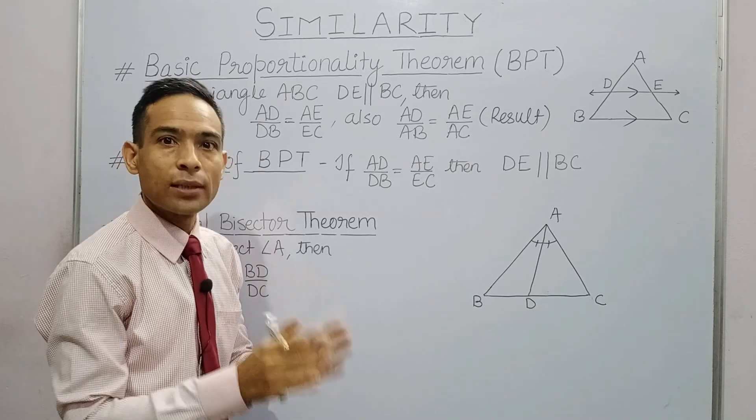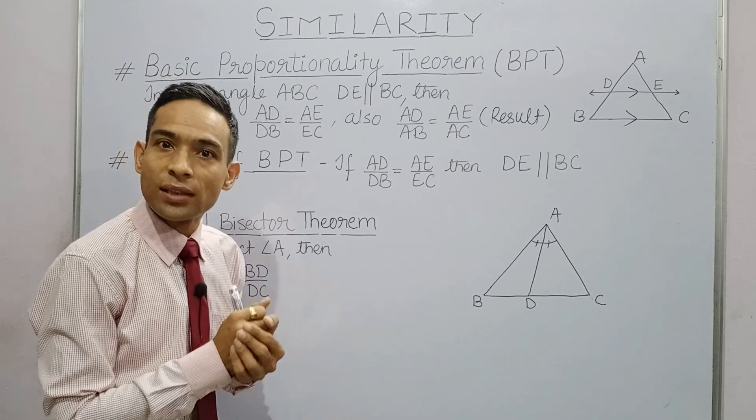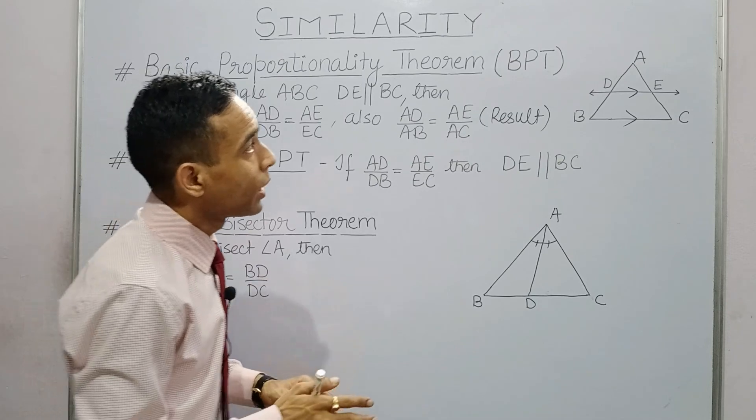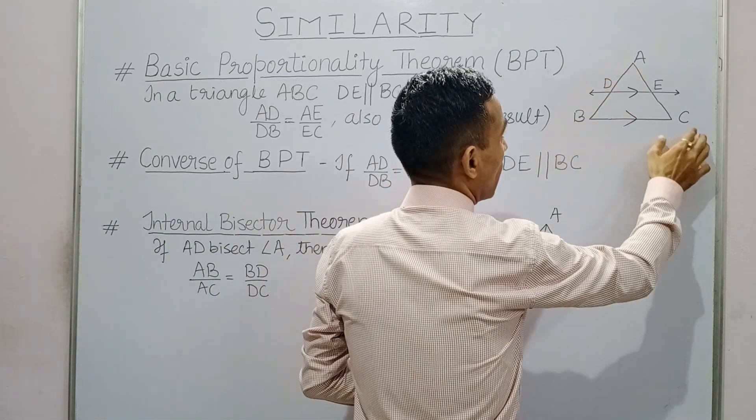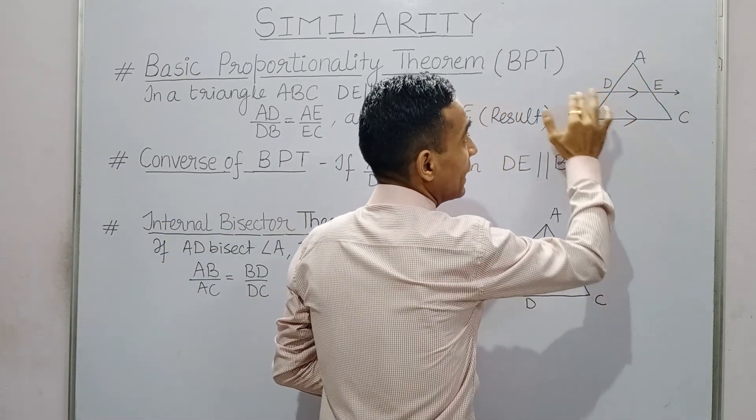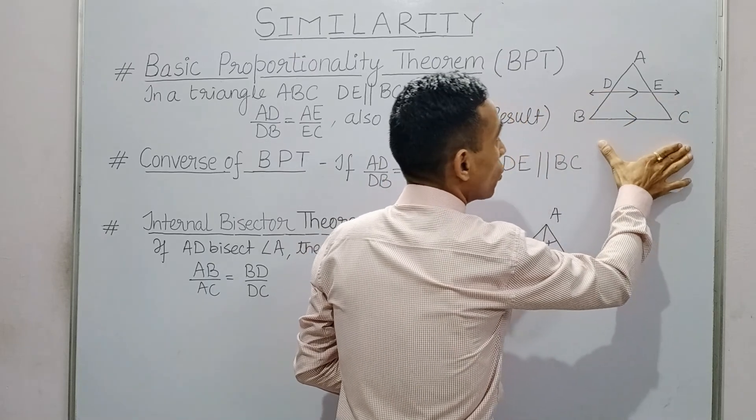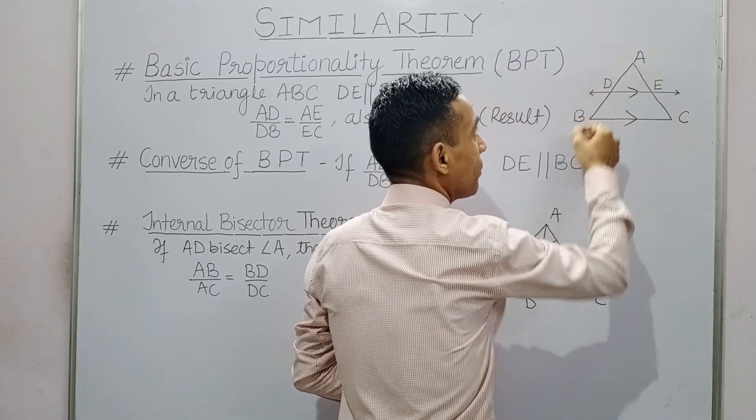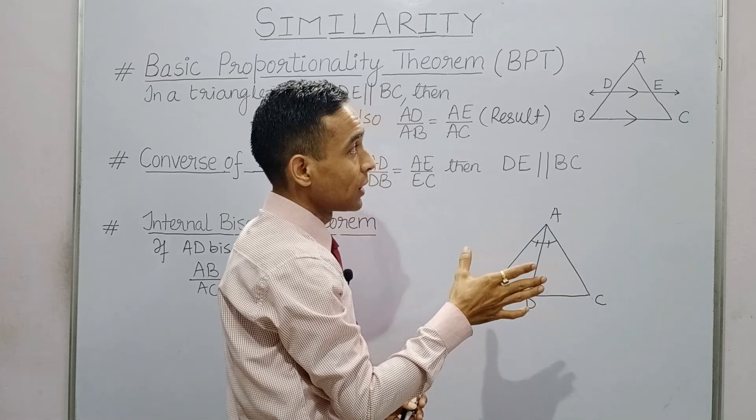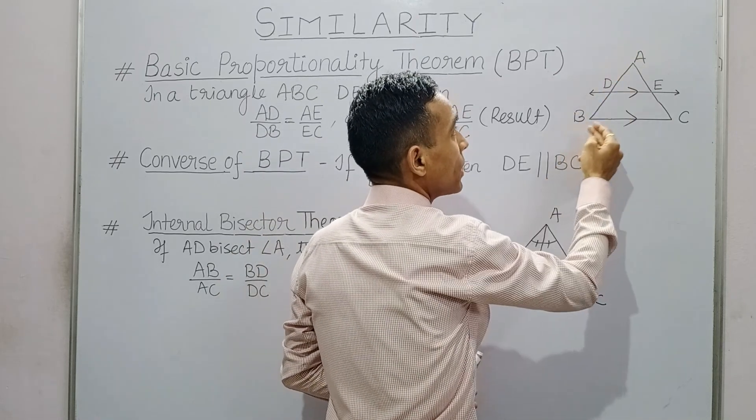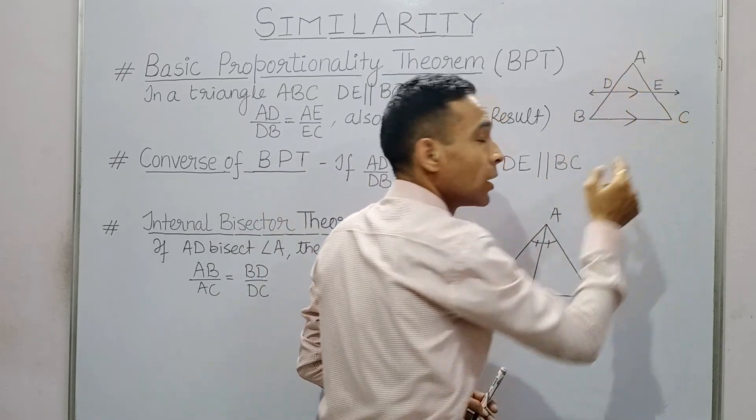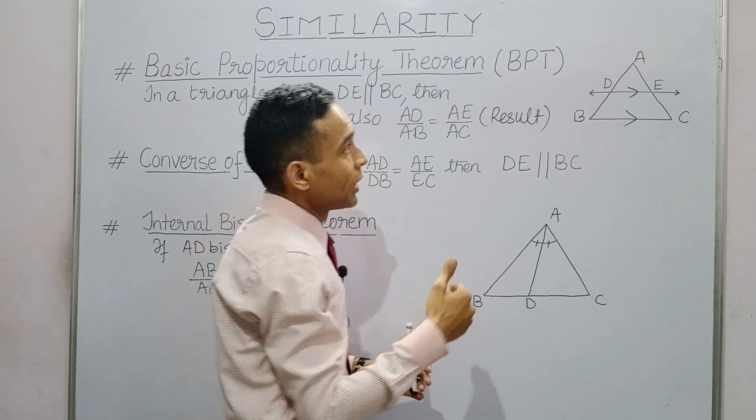This means that if we have a triangle ABC and DE parallel to BC, then this DE line divides AB and AC in the same ratio. That means AD upon DB is equal to AE upon EC.